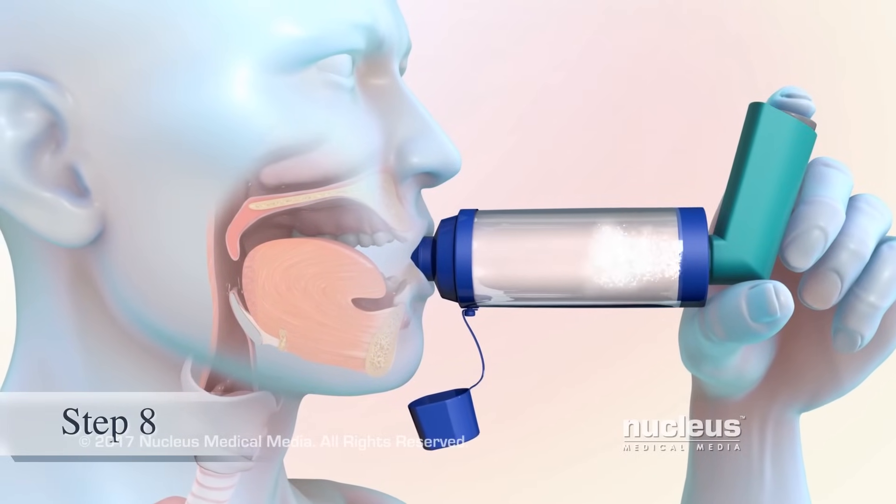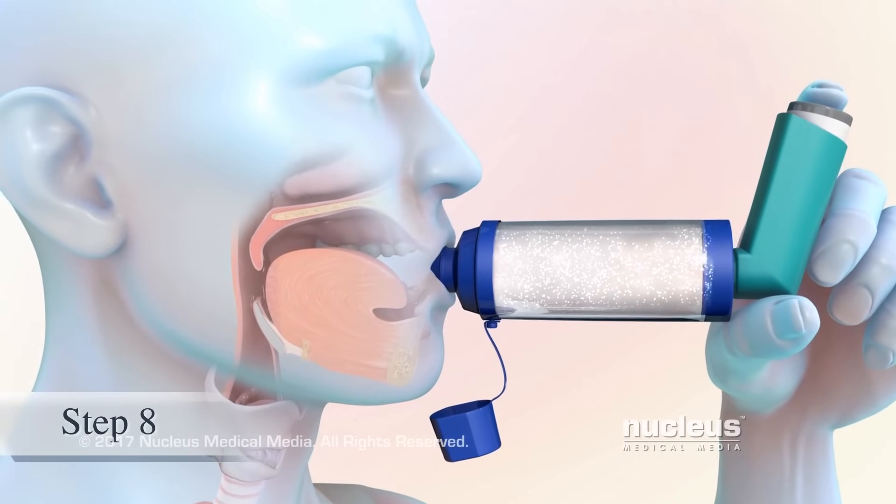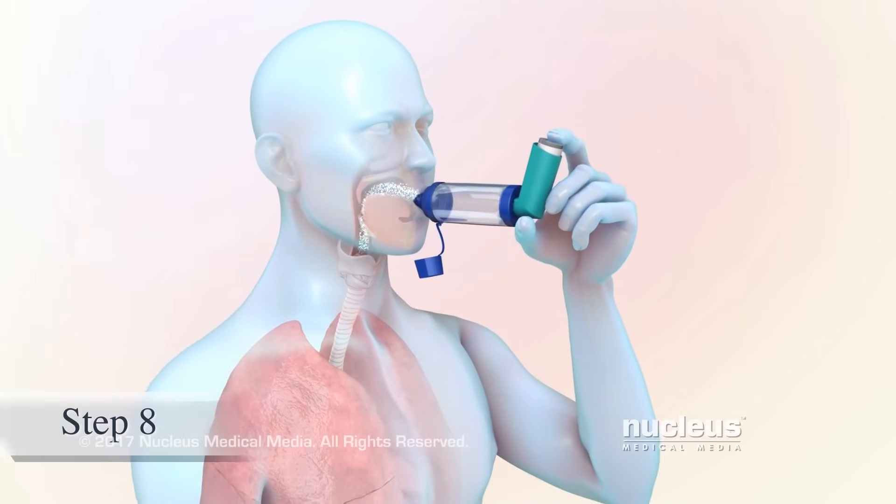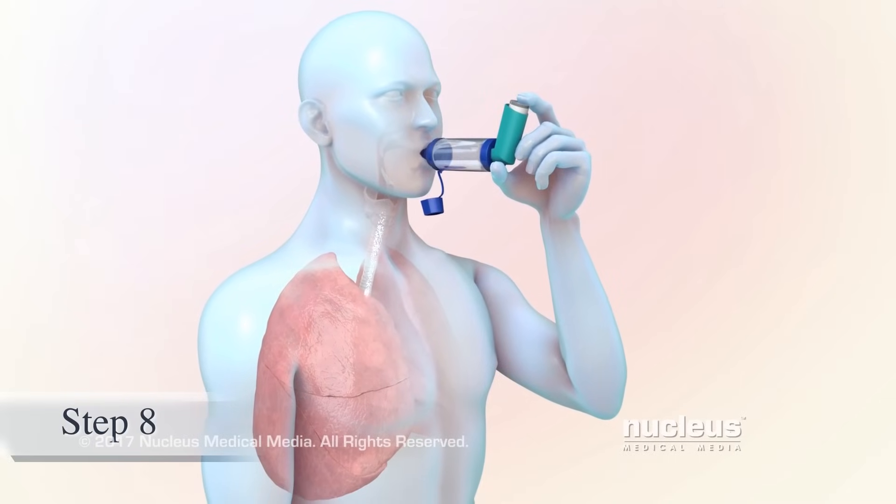Press down firmly on the top of your inhaler to release one puff of medicine into the spacer and breathe in as slowly and as deeply as you can. If you hear a whistling sound, you are breathing in too quickly.